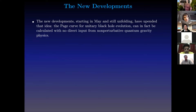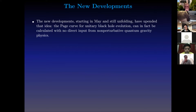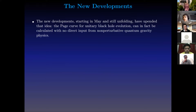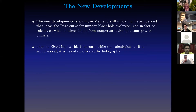The new developments starting in May have really changed this idea that we need to know so much more than we currently do in order to calculate the Page curve. You can calculate the Page curve for unitary black hole evolution with no direct input from non-perturbative quantum gravity physics — using purely semi-classical physics at every step of the calculation. That sounds funny because Hawking used semi-classical physics to calculate information loss, and here we are using semi-classical physics to calculate information conservation. The answer is that the calculation itself is semi-classical, but it is heavily motivated by holography, and the interpretation of the quantity we calculate as an entropy is provided to us by holography.